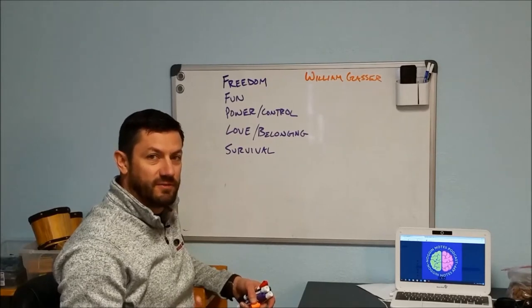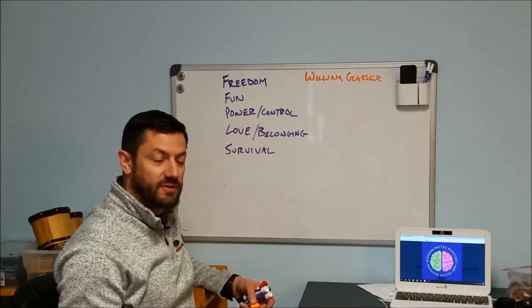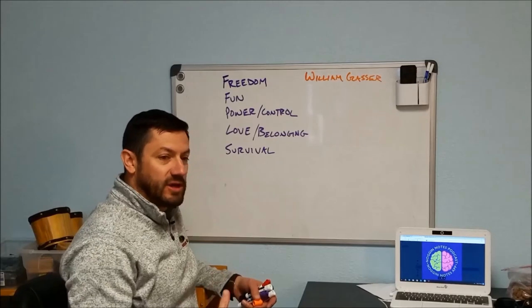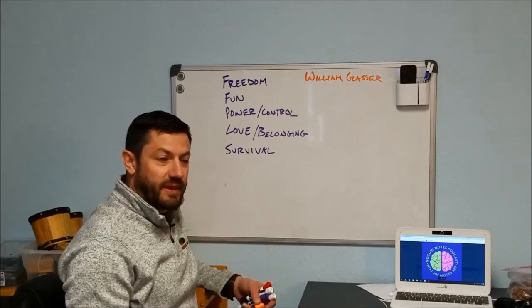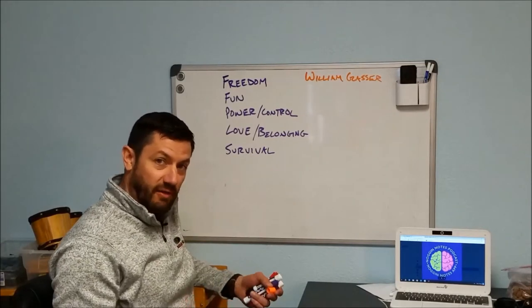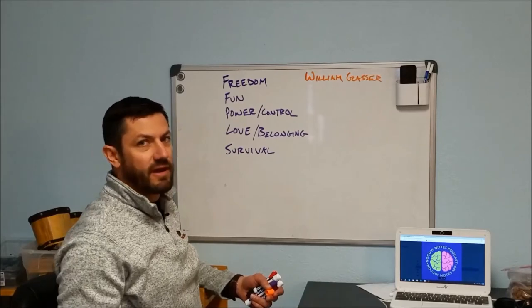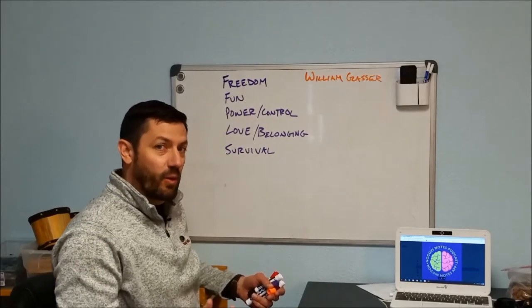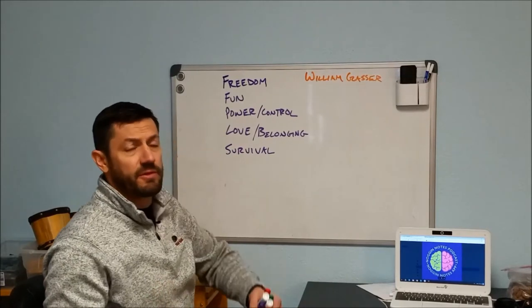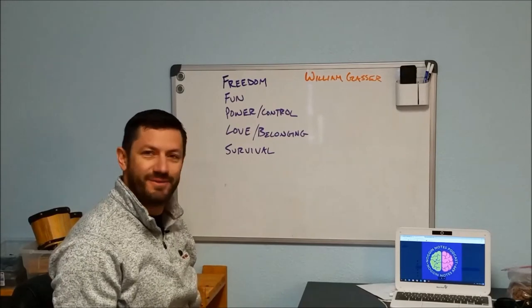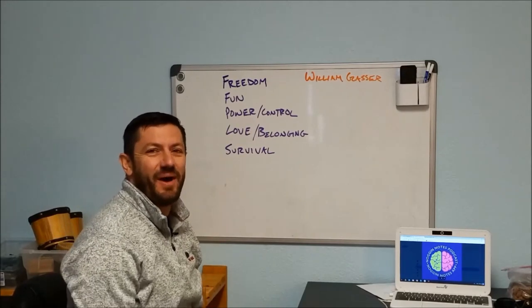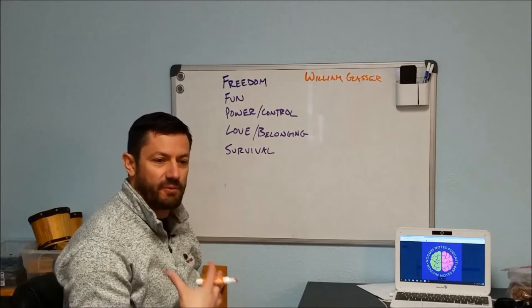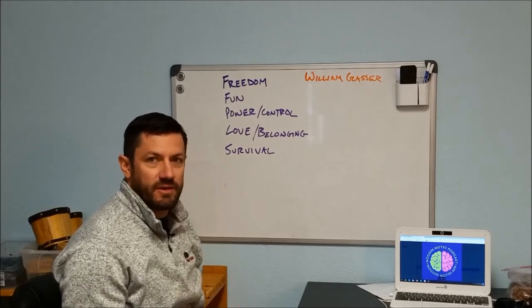We say almost everything because there are two components that we really don't have control over. One is feeling and the other is physiology. When I teach about feeling and emotions, I say that you have a choice over how much and how long you feel something, but you don't necessarily have control over what you feel or whether you feel it.